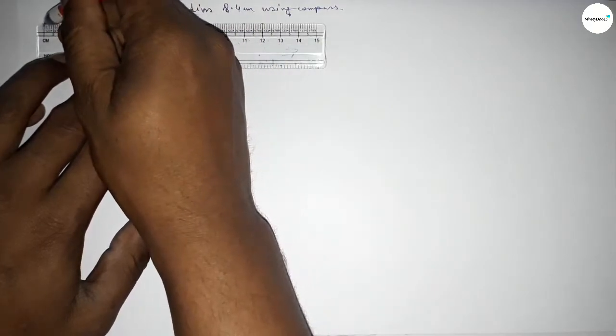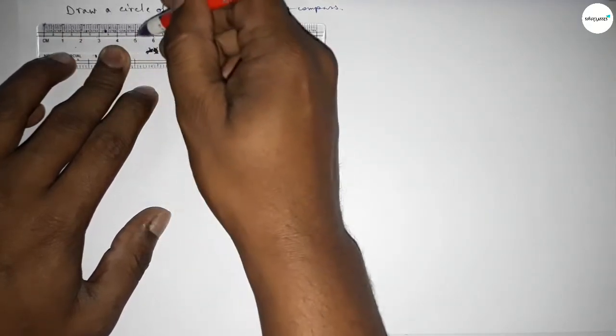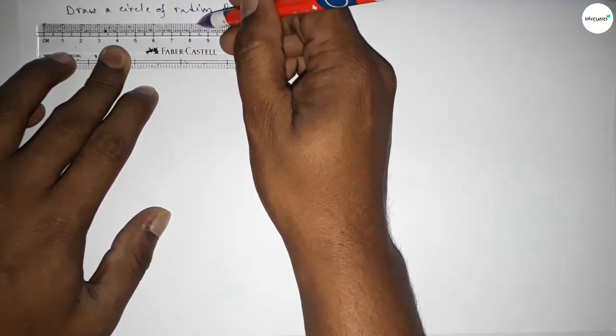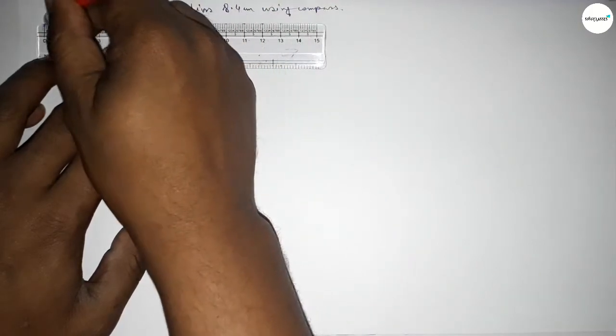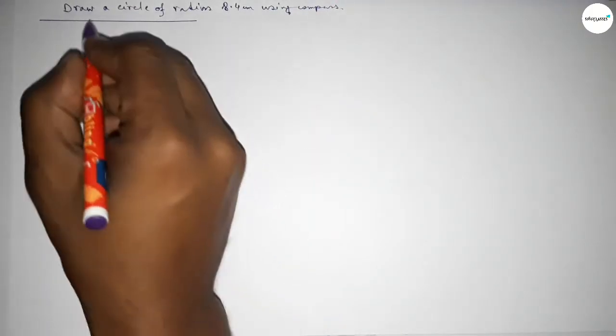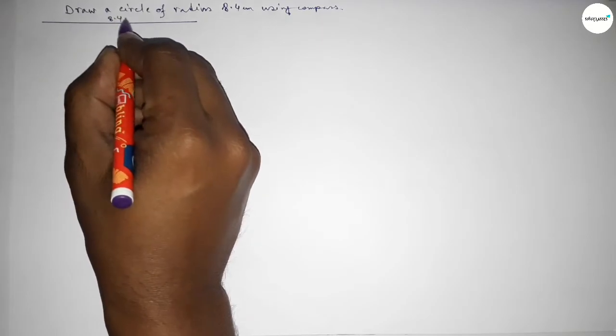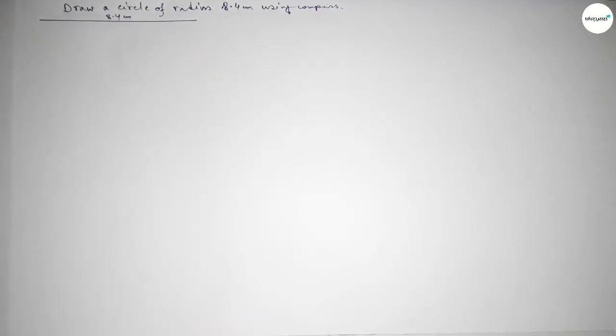Starting at 0, 1, 2, 3, 4, 5, 6, 7, 8, and then 8.1, 8.2, 8.3, 8.4. So this is 8.4 centimeters. This line is 8.4 centimeters. Now taking a point here, and next taking the length of 8.4 centimeters using the compass.